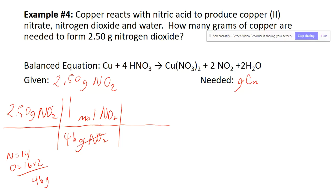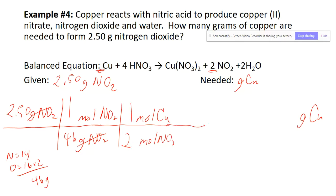With 46 grams per mole for NO₂, that cancels the grams. Now from moles of NO₂ we can't go directly to grams of copper, but we can get to moles of copper using the balanced equation. Copper has a coefficient of 1 and NO₂ has a coefficient of 2, so two moles of NO₂ for every one mole of copper. Then one mole of copper corresponds to 63.5 grams from the periodic table.